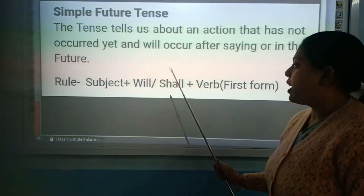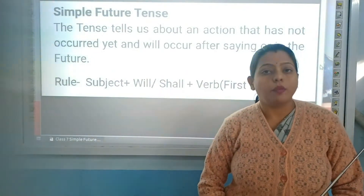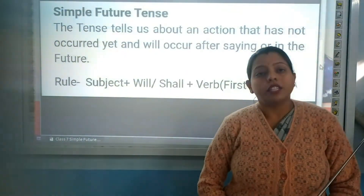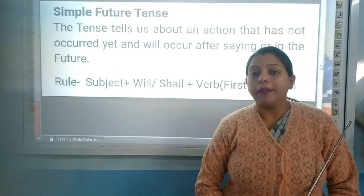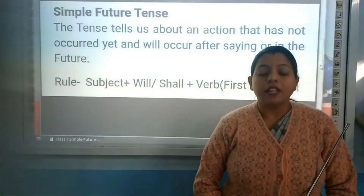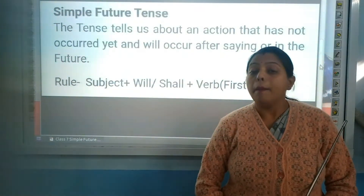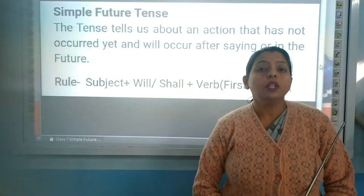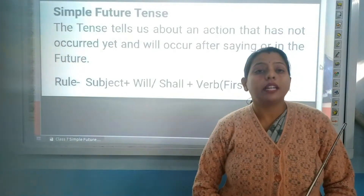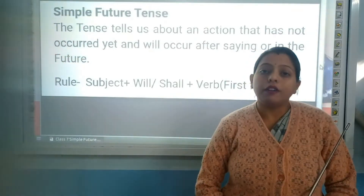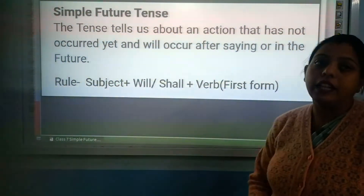After will and shall, we will use the verb's first form. Verbs have three forms. The first form is the base form, used in present tense and future tense. The second form is used in past tense. The third form is called past participle and is used in perfect tense.